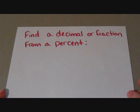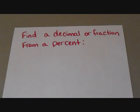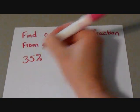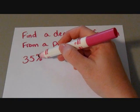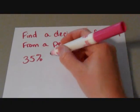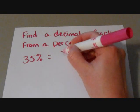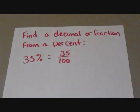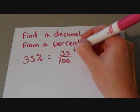Now we're going to find a decimal or a fraction from a percent. Here's our percentage. Thirty-five percent. If you know that this is a percentage, you know that it's this much out of one hundred. So I automatically know what my fraction is. It's thirty-five out of one hundred. Of course, we do want to simplify that.